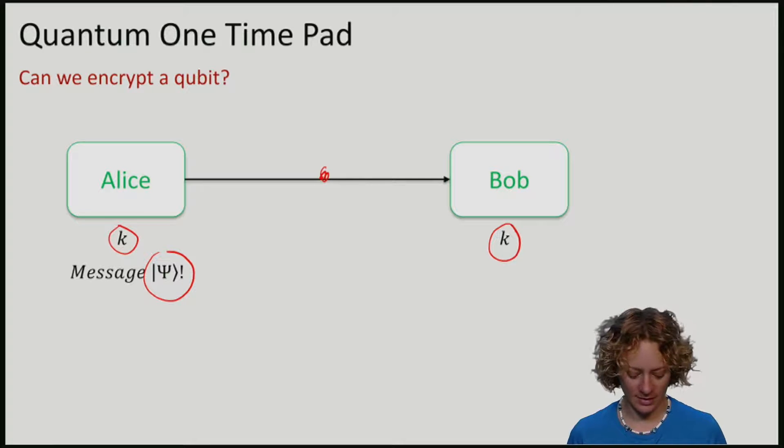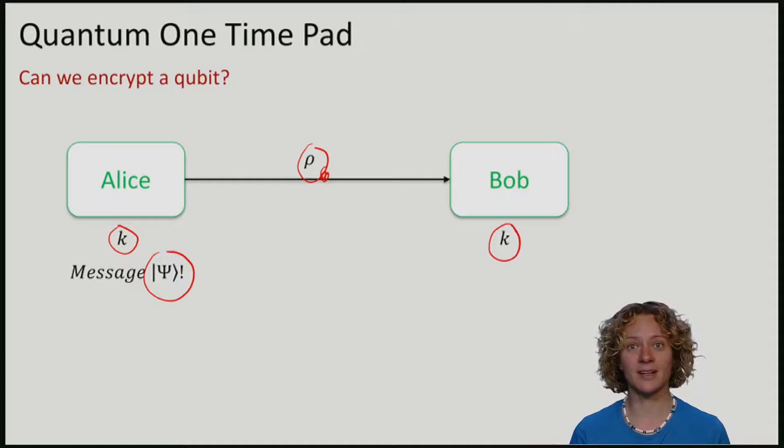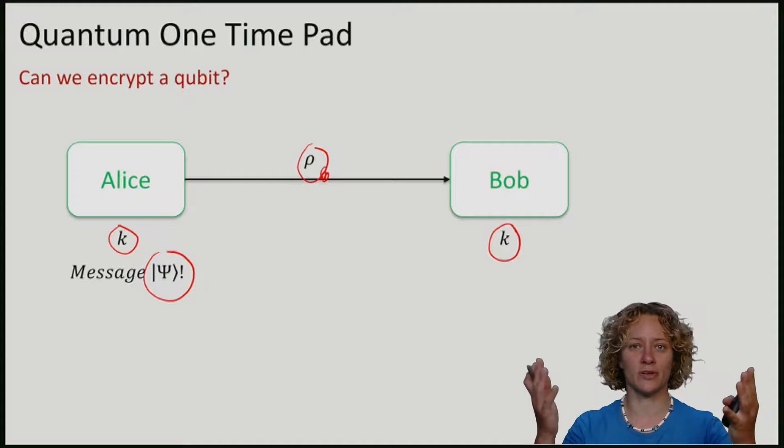Eve thus sees some state rho going across. Bob needs a decryption function, some other transformation that he can apply depending on the key, such that he ends up with psi at the end. This should work for any state psi, even if Alice does not know herself what psi actually is. In other words, she has no classical description of what the amplitudes alpha and beta are. She just has one qubit, a preparation of a qubit.